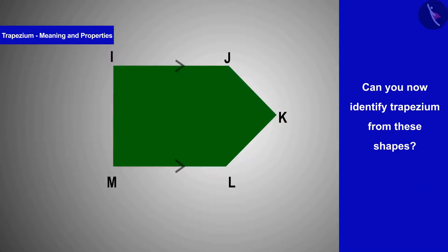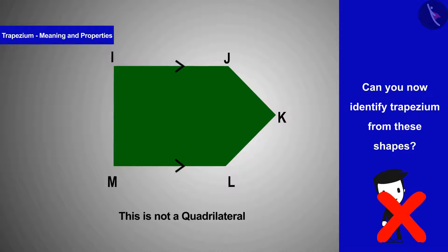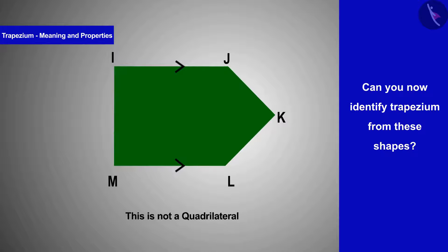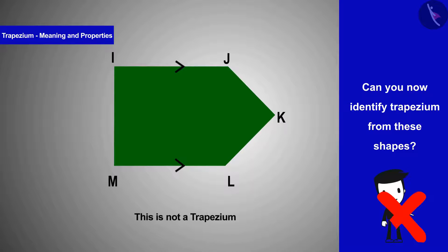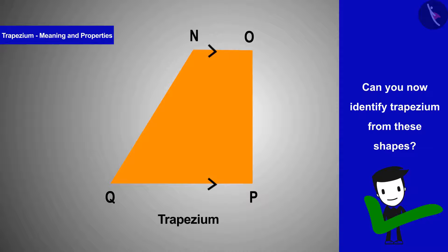The green figure has a pair of parallel sides, but it is not just a quadrilateral — and from the definition of trapezium, a trapezium is a quadrilateral with a pair of parallel sides — so this shape is not a trapezium. The orange shape is a trapezium because it is a quadrilateral with a pair of parallel sides.